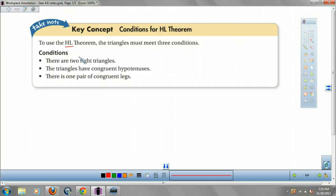To use the hypotenuse leg theorem, that's what we're going to call it from here on out. Because if you have the hypotenuse and a leg of a triangle, then they are congruent. Because if you have the hypotenuse, that means it's a right triangle. Because only right triangles have a hypotenuse.